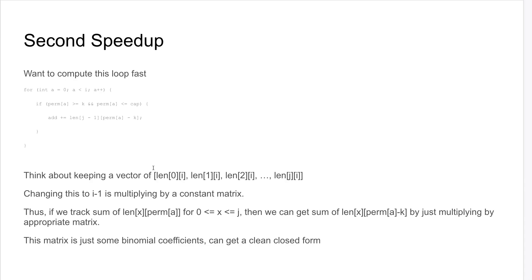Actually, multiplying by a matrix might be a little bit slow to do inline. You can actually expand out what the closed form of this formula should be. It turns out to be some binomial coefficients. So, this leaves a very clean solution.